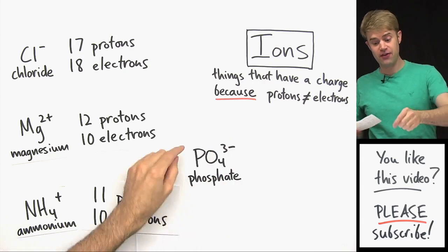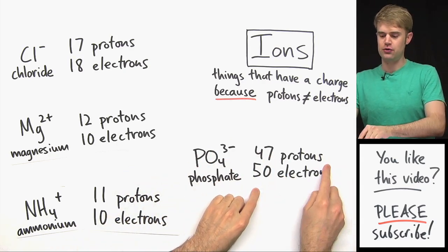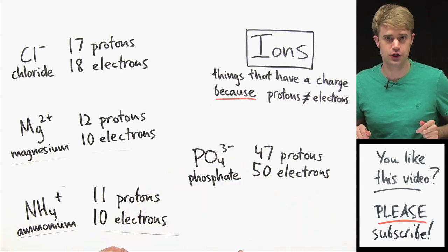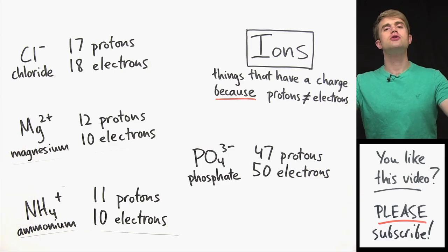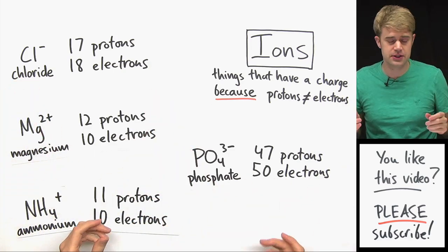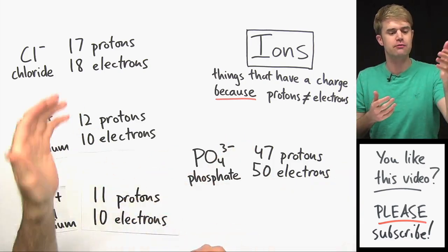Finally, Phosphate, PO4 3- has 47 protons and 50 electrons. We've got three more electrons so it's got this three minus charge. So clearly, there are tons of examples and these are only a few of them. There are tons of examples of atoms and groups of atoms that have different numbers of protons and electrons.